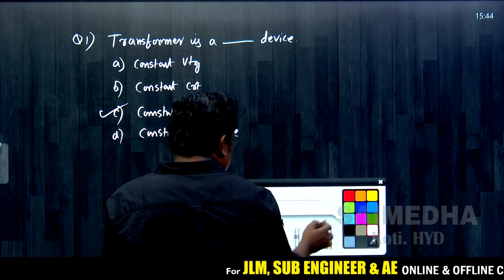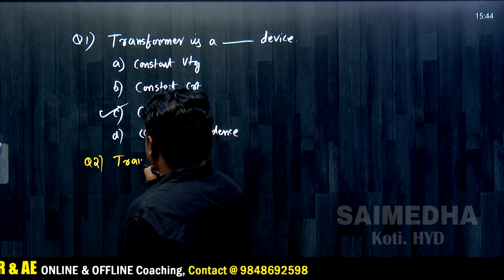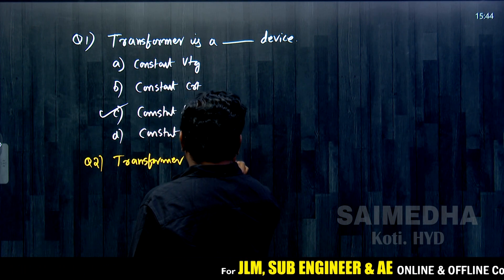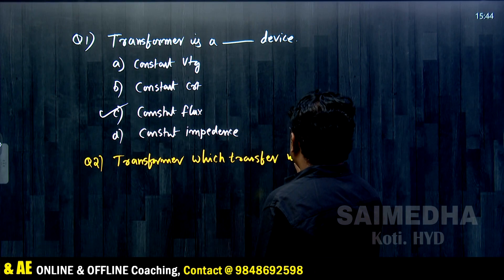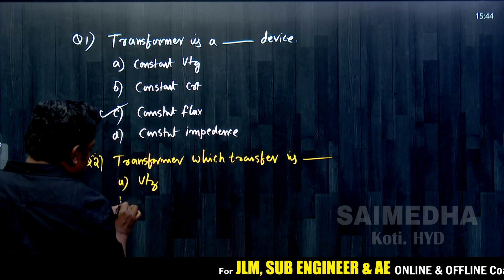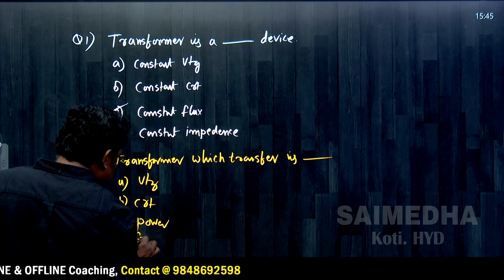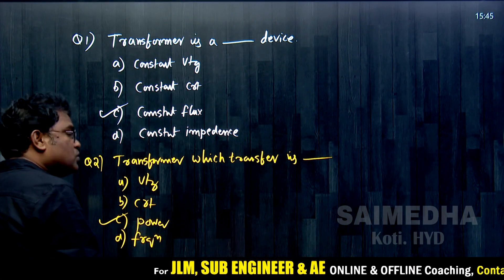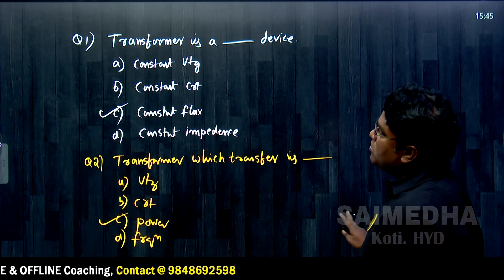Question 2: A transformer transfers dash from one circuit to another. Options: (a) voltage, (b) current, (c) power, (d) frequency. The answer is option C — a transformer transfers power from one circuit to another.